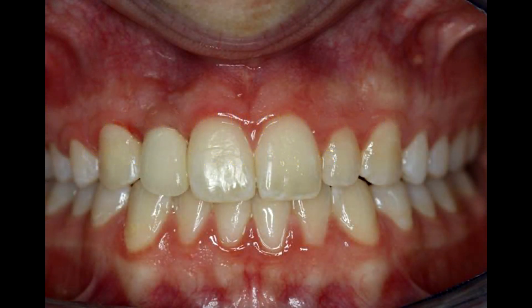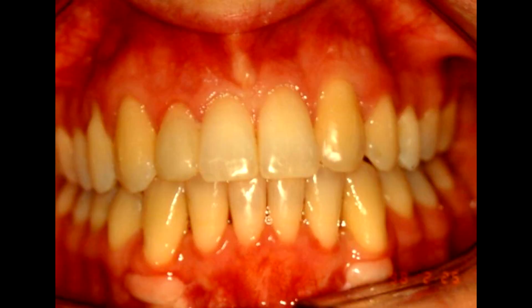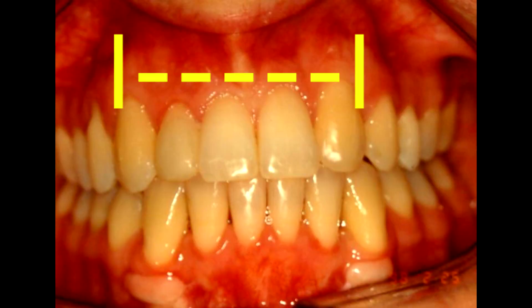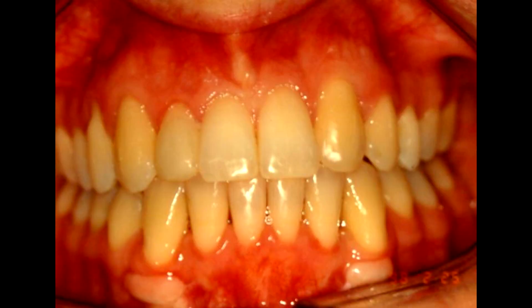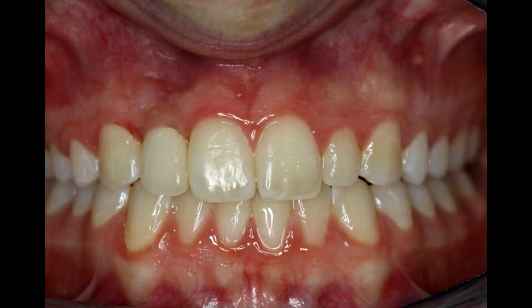As seen here, the smile is broader with the implant than with the close-the-space option. While boys tend to not pay attention to their smile appearance, girls really do. Most girls choose this option.